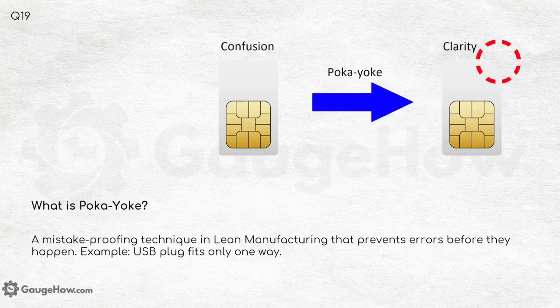What is poka-yoke? It is a mistake-proofing technique in lean manufacturing that prevents errors before they happen. For example, a USB plug fits only one way, and SIM cards of mobile phones fit in only one way — that is how poka-yoke eliminates confusion and ensures clarity.